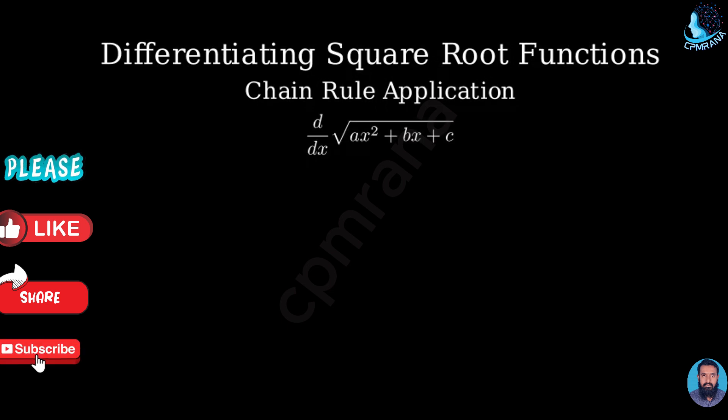We want to find the derivative of the square root of ax² plus bx plus c. This is a complex function that we'll need to handle carefully using the chain rule.